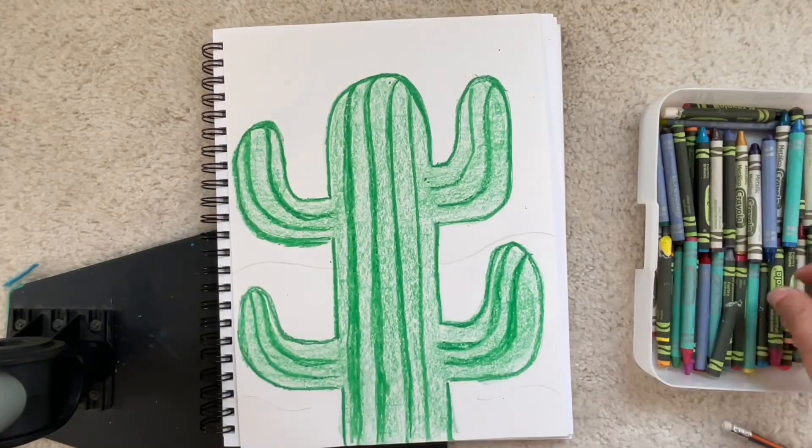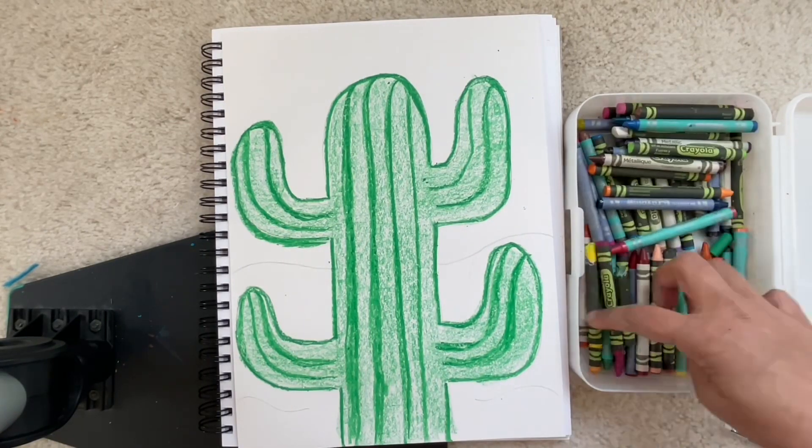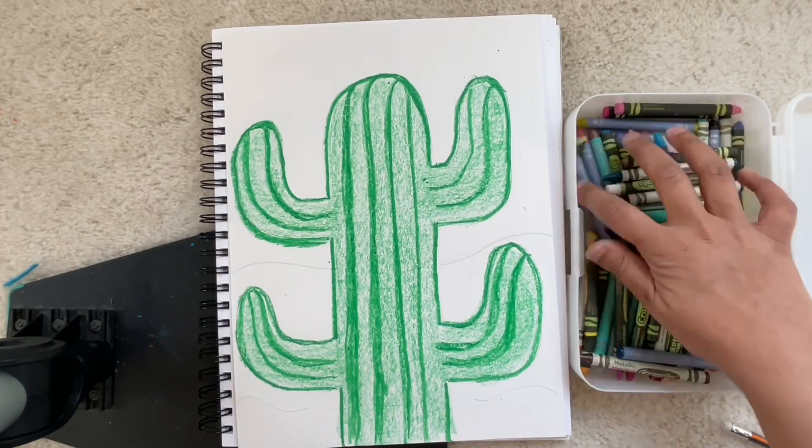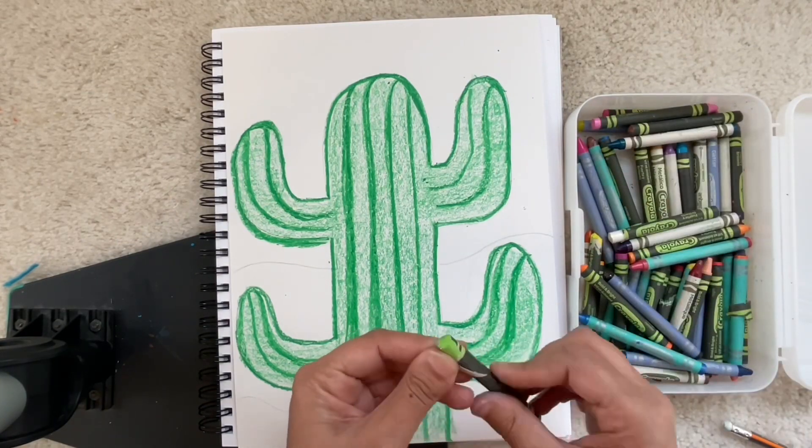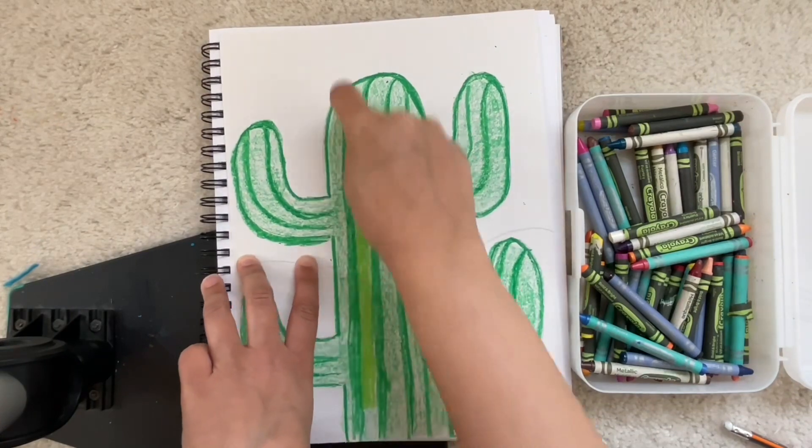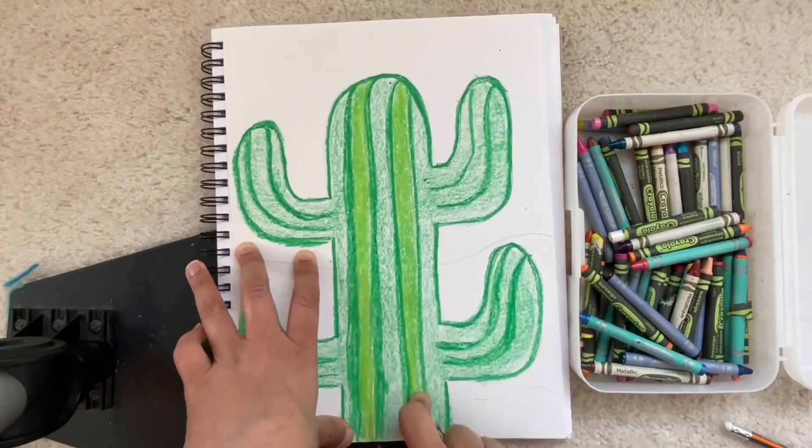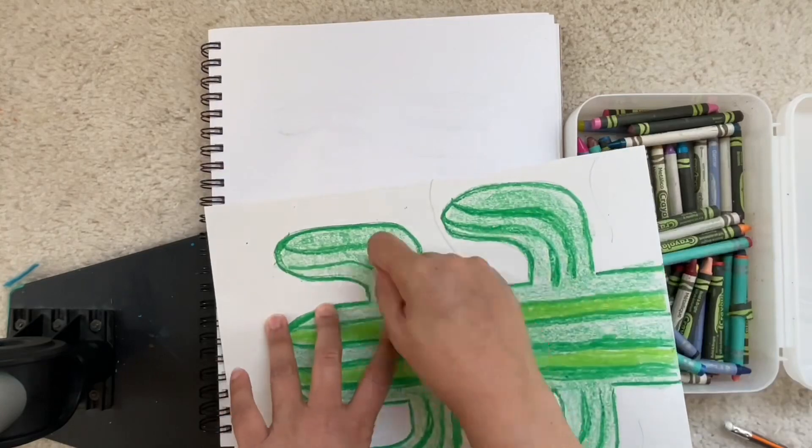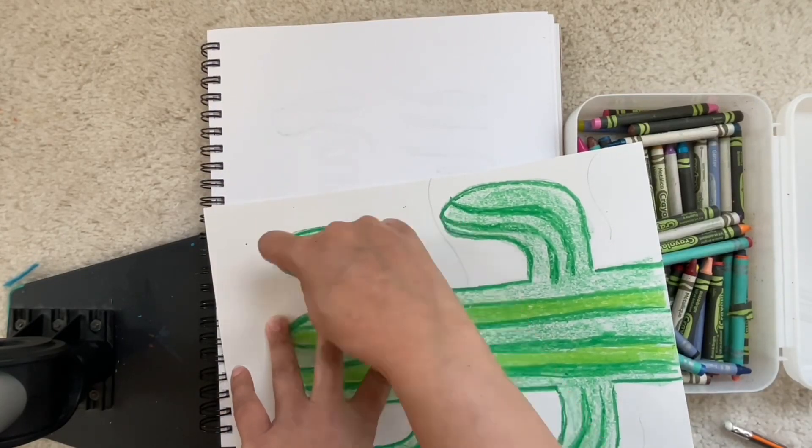Then I'm gonna go in with the lighter green. I'm gonna go in between a lot of the lines and color that. Skip one and then go to the other. Then do the same for the sides of the cactus.